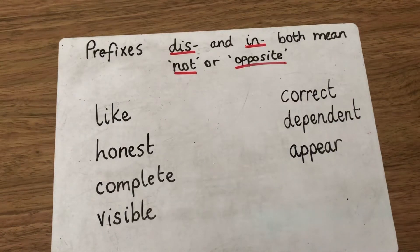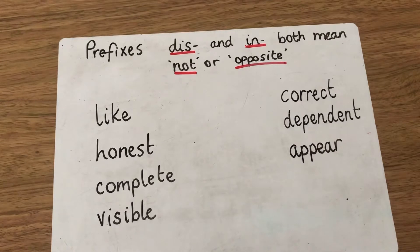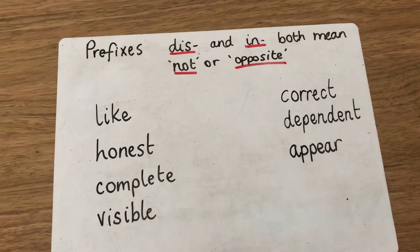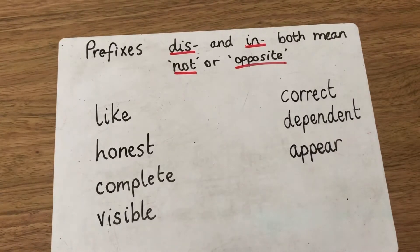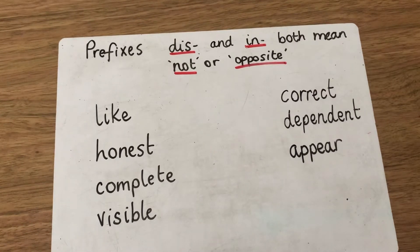Hi everybody, Miss G here. So today we're going to have a little look at some spelling — we've got some prefixes. Just to remind you, a prefix is a group of letters that we can add to the front of a root word and it changes its meaning. The best thing about adding prefixes is that we actually don't need to change any spelling in the root word.